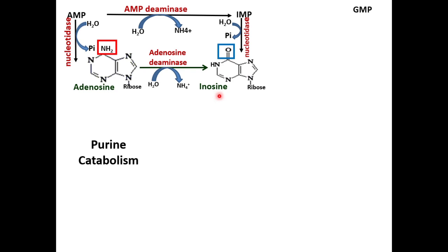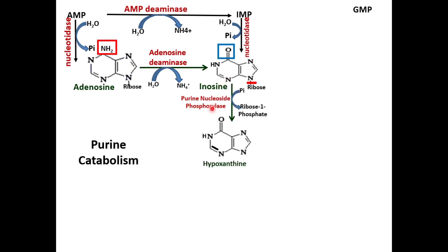Adenosine becomes inosine. IMP is then converted to hypoxanthine with the help of the enzyme Purine Nucleoside Phosphorylase, which removes the ribose from inosine. This ribose is removed in the form of ribose-1-phosphate, yielding hypoxanthine.